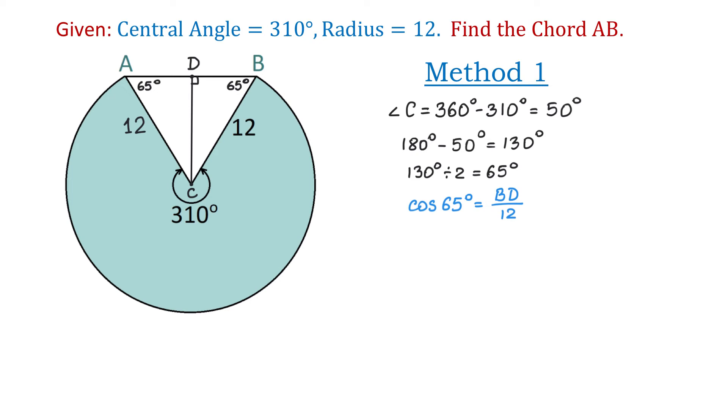Then to solve for BD we will multiply both sides by 12, and on the right side 12 and 12 will cancel. Then BD equals 12 cosine of 65 degrees, which is approximately 5.07.